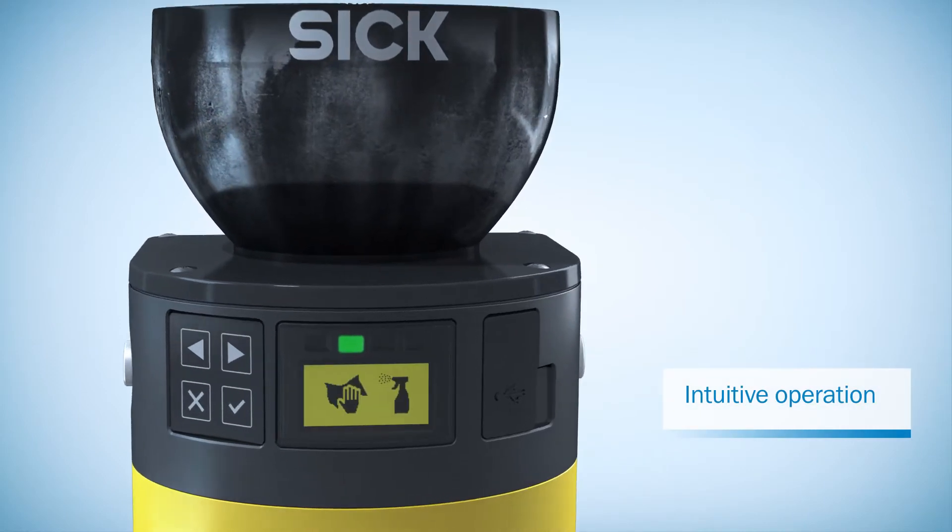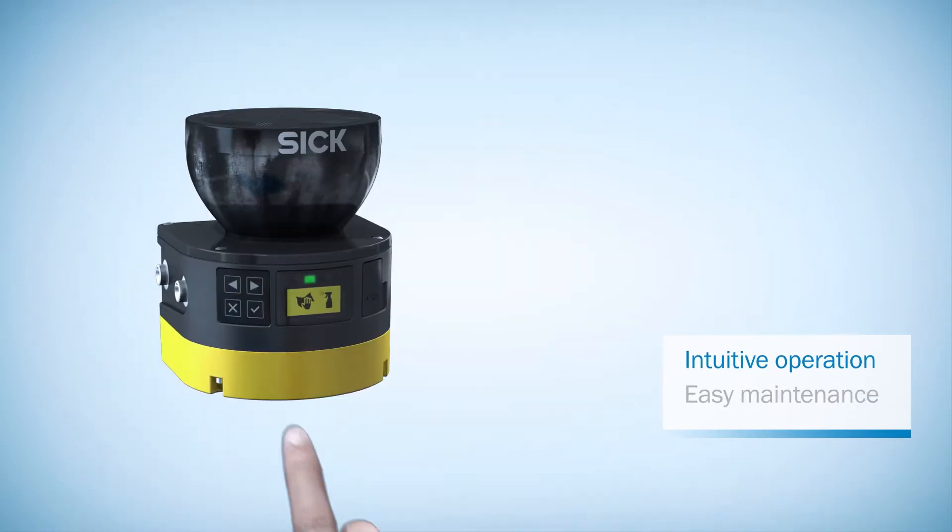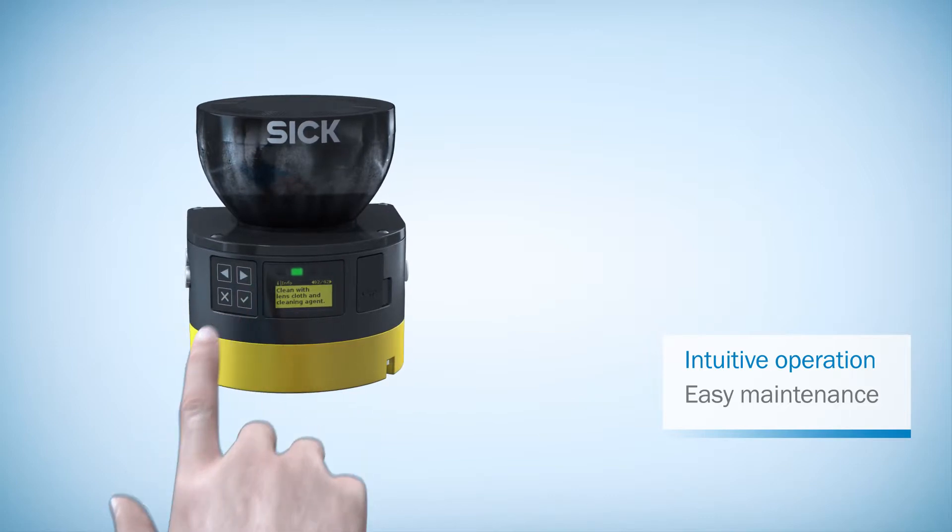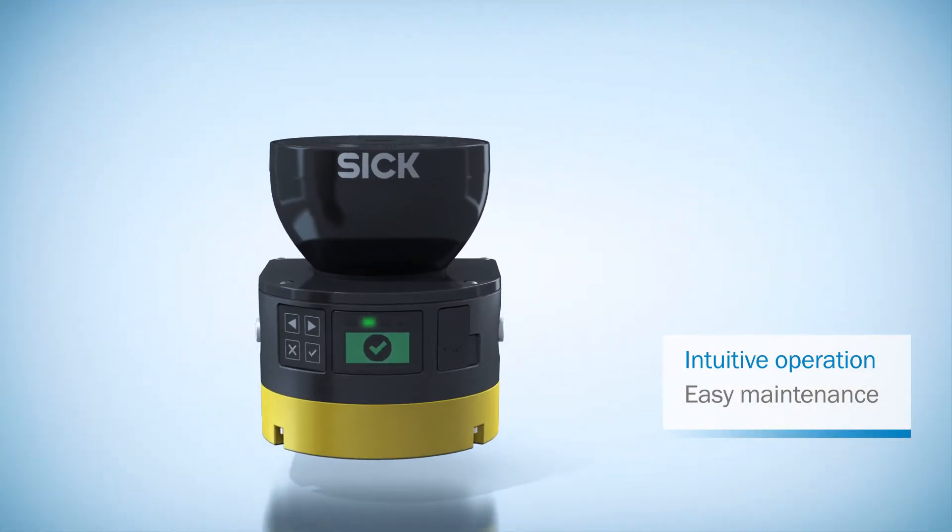MicroScan3 features a color display that provides information about the current status of the sensor. Additional messages are displayed in clear text at the touch of a button. Faults occurring during operation are thus quickly resolved and productivity remains unaffected.